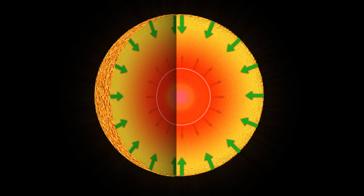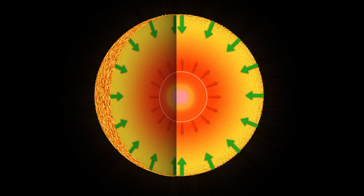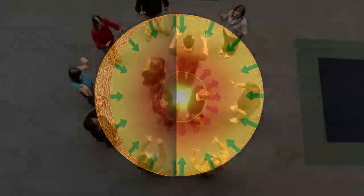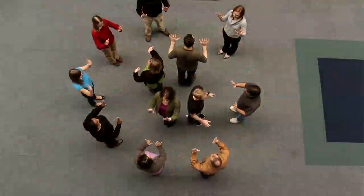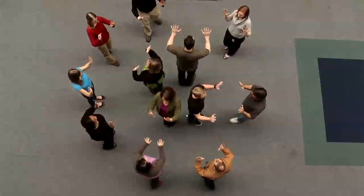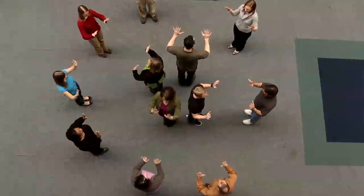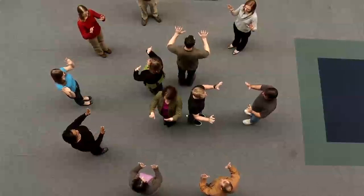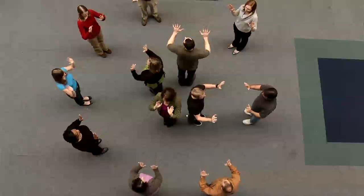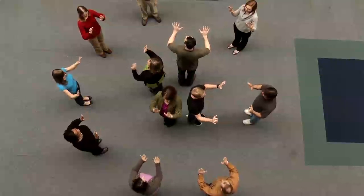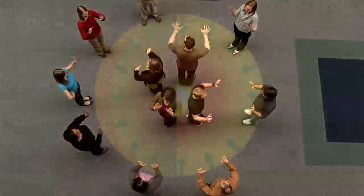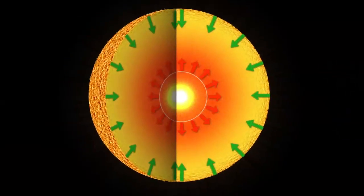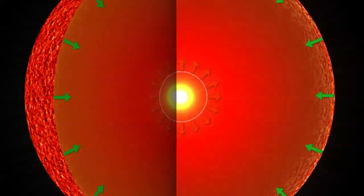The slight decrease in the size of the core makes it hot and dense enough to start fusing helium. The participants in the core raise their hands once more as energy is again being generated at the center of the star. Participants in the shell take a step outward to represent the surge in energy, making the star larger than it was during the main sequence phase. The star has become a red giant.